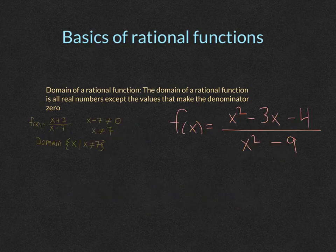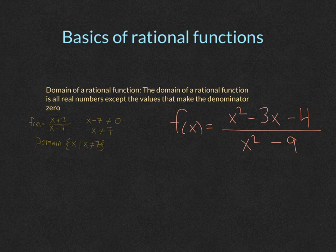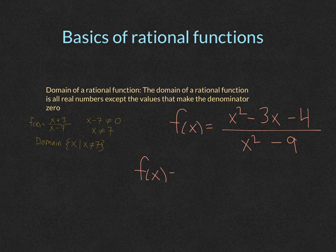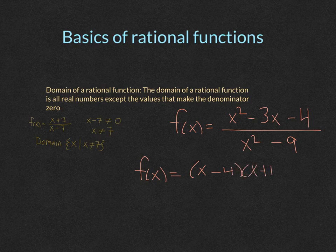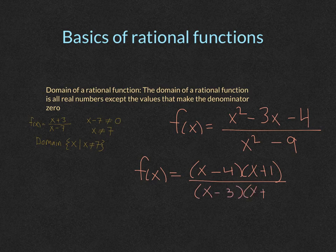Let's look at a problem that maybe is a little bit more complex. So when you have a rational function like this to find the domain, you would want to factor the function first. So we would want to go f of x is equal to x minus four, x plus one on the top, over x minus three, and x plus three on the bottom.